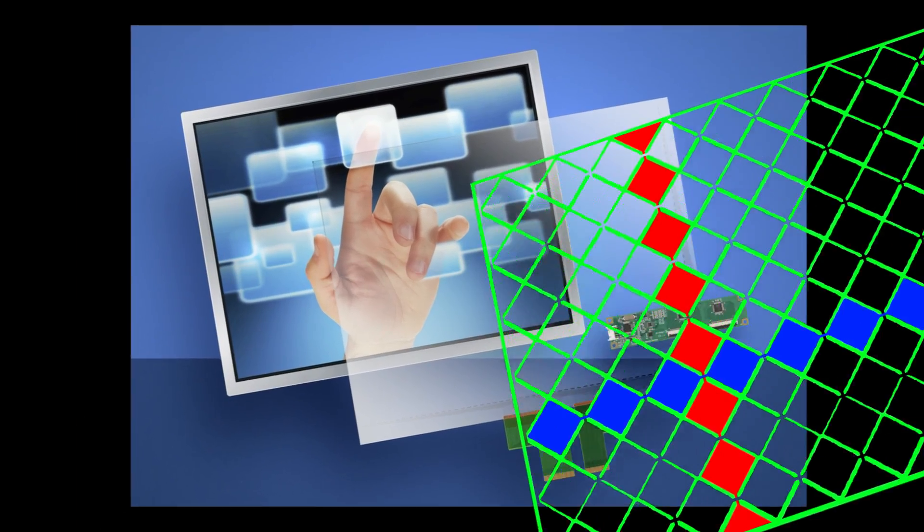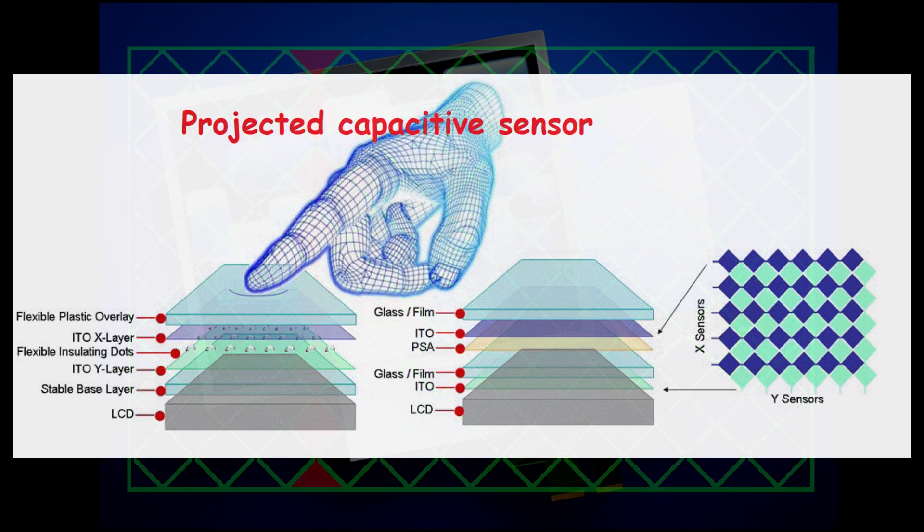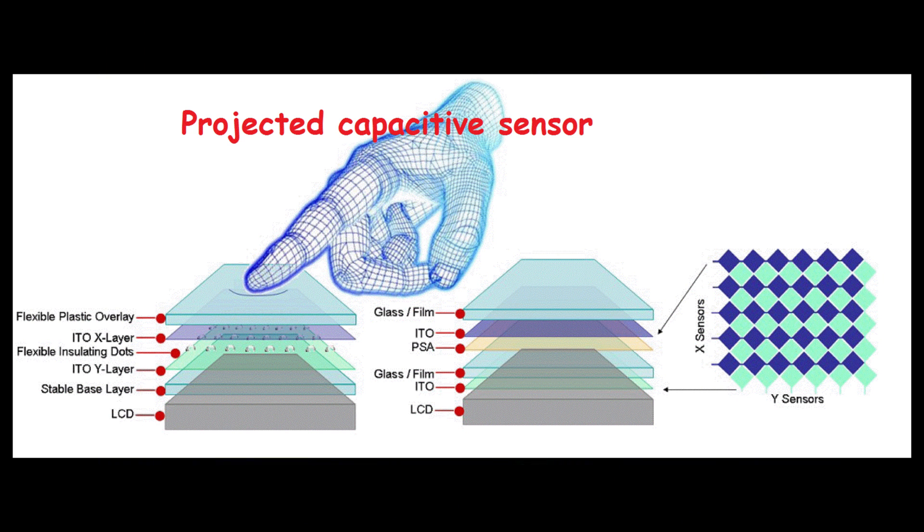Capacitive touchscreens are made of transparent electrodes arranged in rows and columns. By projecting the E-field from the rows to the columns one by one and measuring the signal profile, the location of the external influence can be calculated.